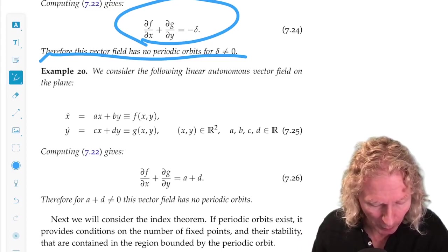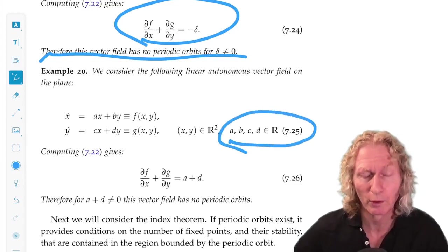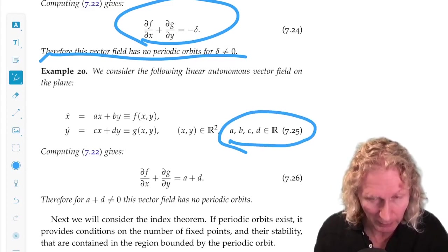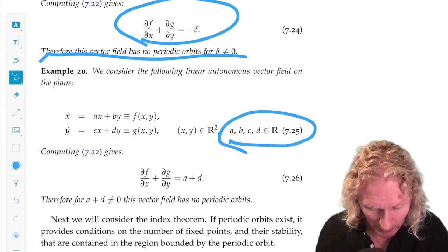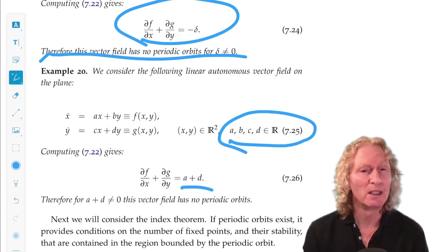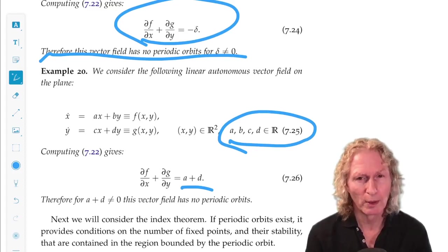The coefficients or parameters, a, b, c, and d? They're just, let them be arbitrary real numbers for the moment. Compute this quantity and Bendixson's criteria and you'll get that it's a + d. So for a + d non-zero, this vector field has no periodic orbits.